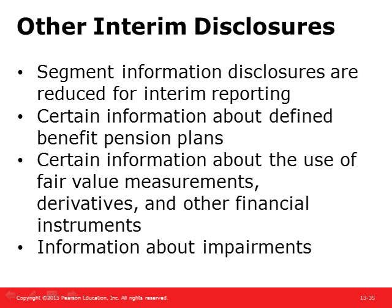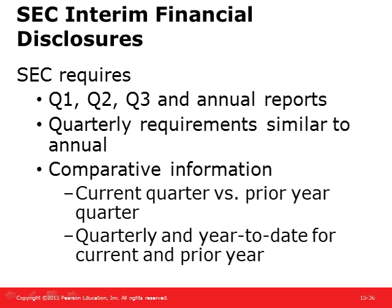Segment and interim reporting is a very significant area that takes considerable effort on behalf of organizations to stay current with and to provide information that is useful to shareholders and economic decision-makers while meeting requirements. The SEC requires quarterly reports to be prepared for stockholders and filed with the SEC using GAAP on Form 10-Q within 40 days after the end of the quarter. Fourth quarter reports are not required, but SEC Rule 14a-3 requires inclusion of selected quarterly data in the annual report to shareholders. Quarterly reports are not audited, so the CPA report states that a review rather than an audit has been performed.